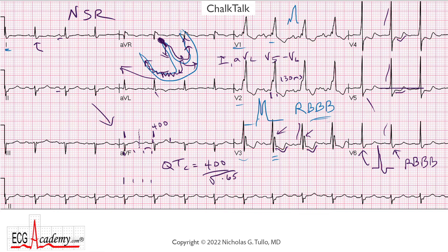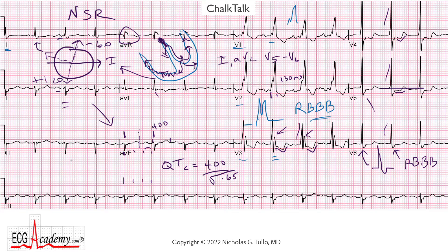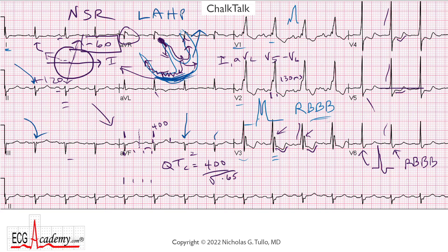Next thing to look at is the axis. Look for which lead is most isoelectric — it looks like it's AVR. AVR should never be isoelectric under normal circumstances because AVR is pointed about 30 degrees above lead 1 headed towards the right arm. That means the axis is either minus 60 or plus 120. If you look at leads 2, 3, and AVF, they're negative — meaning the axis is going away from the feet — so minus 60 is the correct axis. The first thing you want to do is make sure you're not dealing with an old inferior MI, because if you have an old inferior MI and the underside of the heart is not working, the axis will tend to shift upwards towards the left. But we do not have Q waves in the inferior leads — leads 2, 3, and AVF have little tiny R waves, and there's a clear R wave in lead 2. So it's not an old inferior MI, and therefore it must be left anterior hemiblock, or left anterior fascicular block.